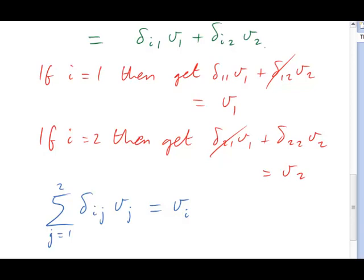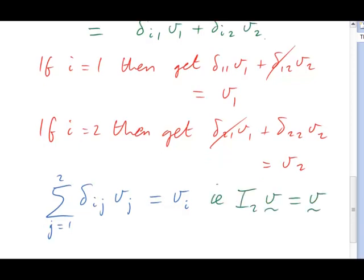So, once again, nothing really new here, but just a rather strange way of looking at things. Bear with me though, it is going to bear fruit. Let me now do a similar exercise, but this time with delta multiplied by another 2x2 matrix that I'll call A.